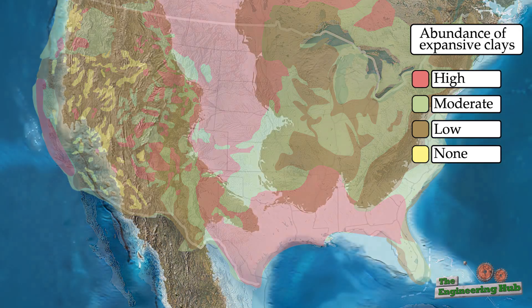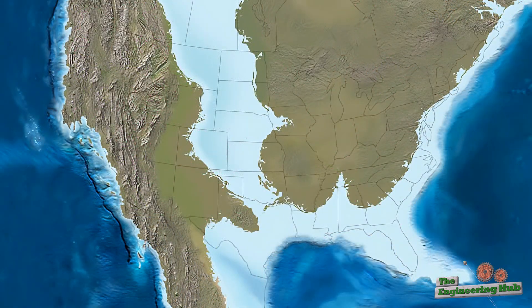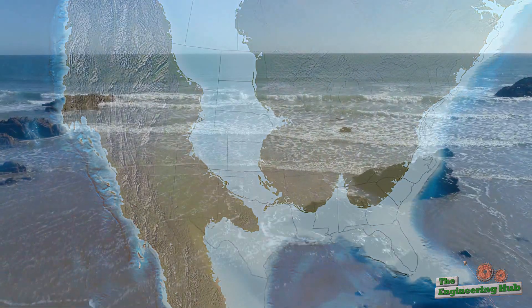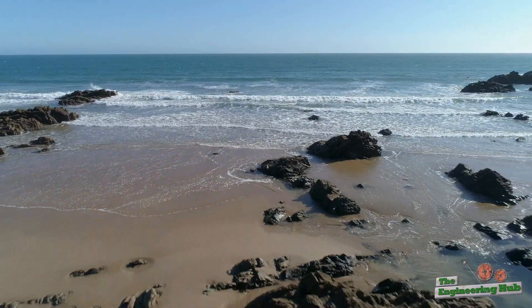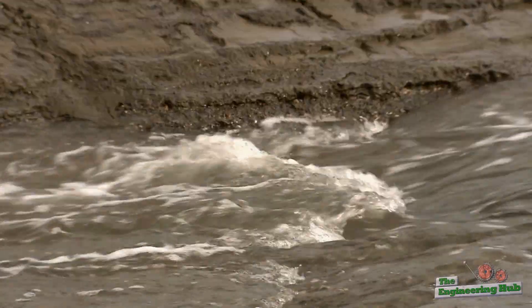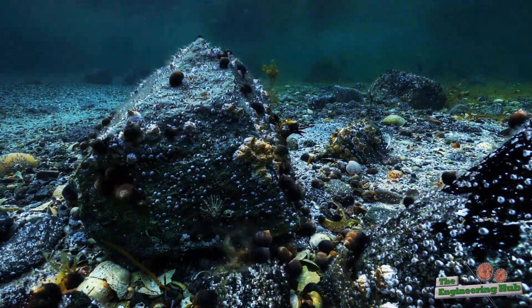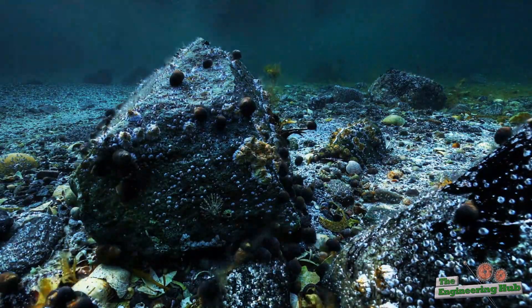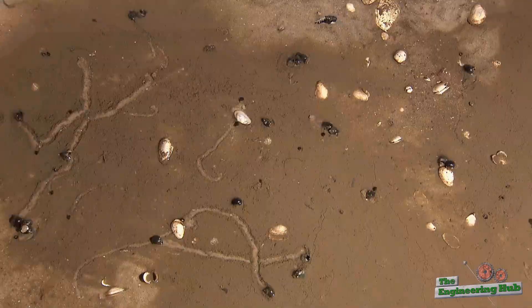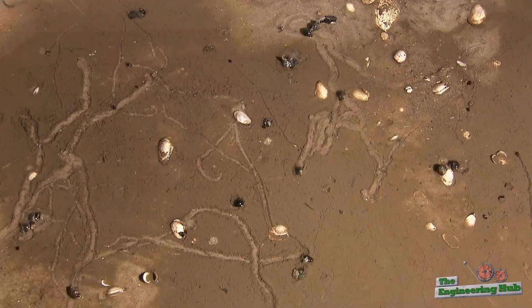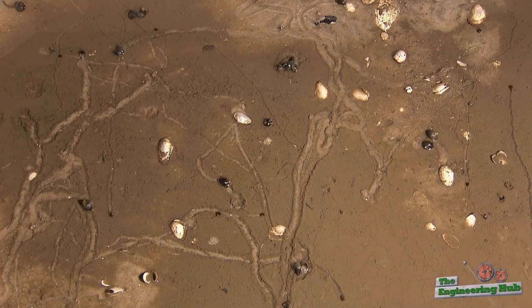This region was covered by shallow seas in the Cretaceous period more than 65 million years ago. Over millions of years, the seas deposited marine sediments and formed sedimentary rocks. Over time, these rocks underwent chemical weathering where the parent materials break down into smaller particles forming clays.